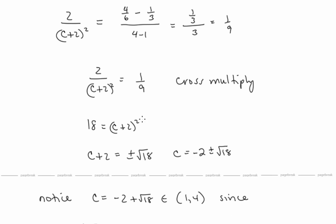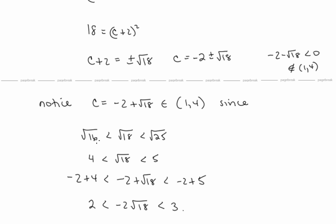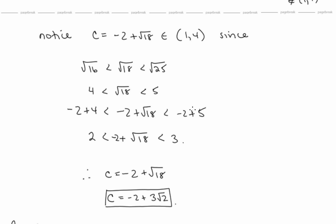Let's cross multiply and take the square root. We have c + 2 = ±√18, so c = −2 ± √18. Notice −2 − √18 is a negative number, so it's not in our interval. Let's check that −2 + √18 is in [1, 4]: √18 is between √16 = 4 and √25 = 5, so adding −2 gives a value between 2 and 3, which is definitely in this interval. So c = −2 + √18, which we can also write as c = −2 + 3√2.